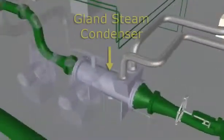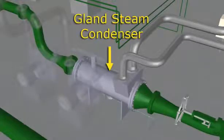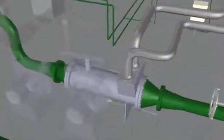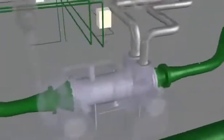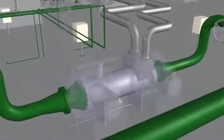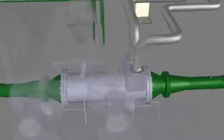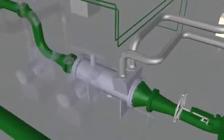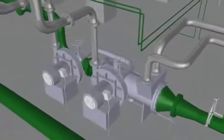The gland steam condenser is provided to condense the leak off steam from the packing glands and steam valve stems. Steam leakage from the turbine packing glands enters the shell and is condensed by the cooling water and transferred to the main condenser from the lower part of the shell through a drain trap.